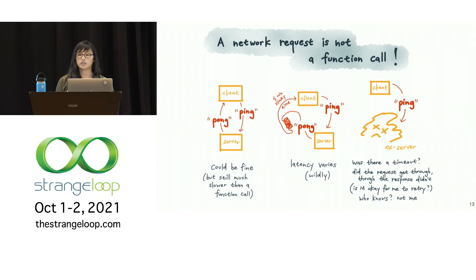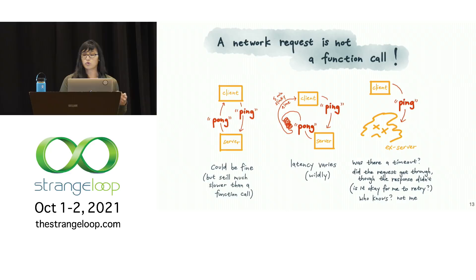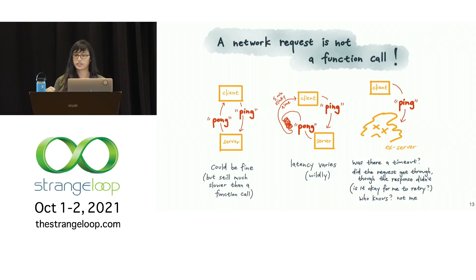A network request is really different from a local function call. A local function call is predictable and either succeeds or fails depending on parameters that are totally under our control. But a network request is unpredictable. It could return successfully, albeit much more slowly than a function call. The network could be congested or the remote service could be overloaded, so it might take 20 seconds or five minutes to do the exact same thing. The request or response could get lost due to a network problem, or the remote service could be unavailable, or we could hit a timeout without receiving a result, and we would have no idea what happened. If we don't receive a response, we have no way of knowing whether the request got through or not.